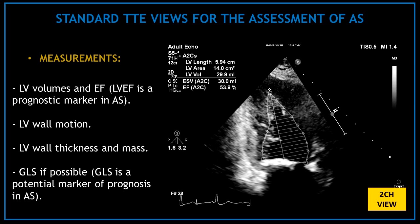Move to the apical two-chamber view and obtain a zoom view of the left ventricle. Measure the left ventricular volumes and ejection fraction, visually assess the left ventricular wall motion, and measure the left ventricular wall thickness and mass. If possible, obtain the global longitudinal strain. GLS and left ventricular ejection fraction are prognostic markers in aortic stenosis.